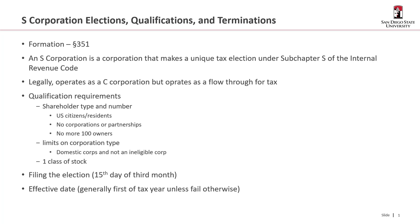S-corporations file this election by the original due date of their tax return, which is the 15th day of the third month. If you do it before that date, you can apply S-corporation status for the whole year. If you do it after that date, it becomes effective the following year.